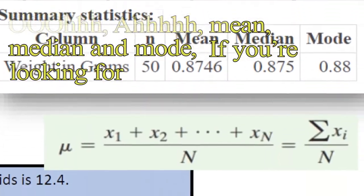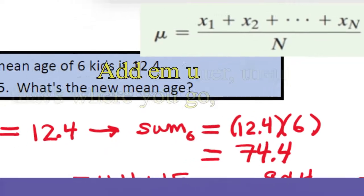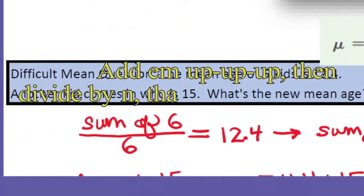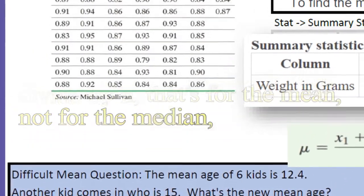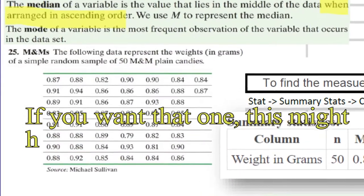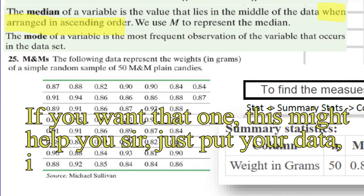I mean median and mode. If you're lookin' for the center, then that's where you go. Add them up, then divide by N. That's for the mean, not for the median. If you want that one, this might help you, sir. Just put your data in ascending order.